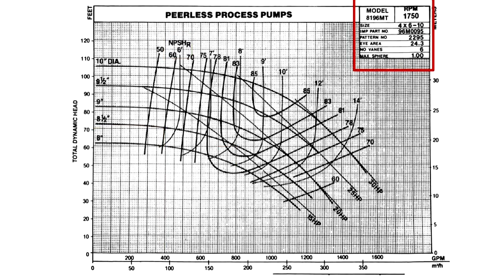Usually, the title block will show model, size, speed, and other pertinent details. In this case, the impeller part number, pattern number, eye area, and the maximum size of a sphere which will pass through the impeller.